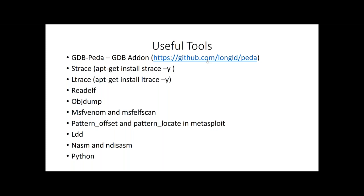MSFVenom generates shellcode, and MSF ElfScan is useful for finding jump and call points in your executable Linux files. Pattern Offset and Pattern Locate we're going to use to get EIP control, and the rest is just for assembly and script development. If you're not very good at Python, I highly suggest you learn it — it's going to be very useful for these sorts of things.